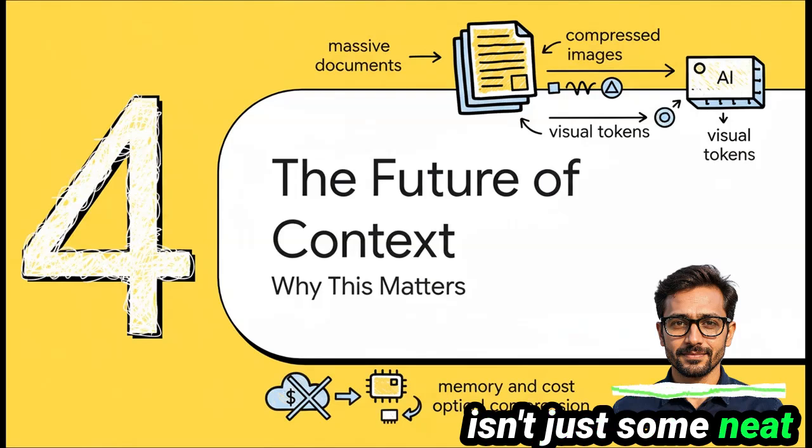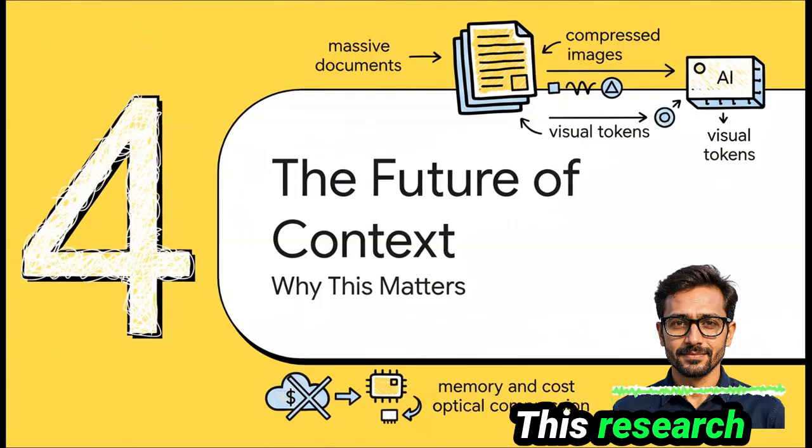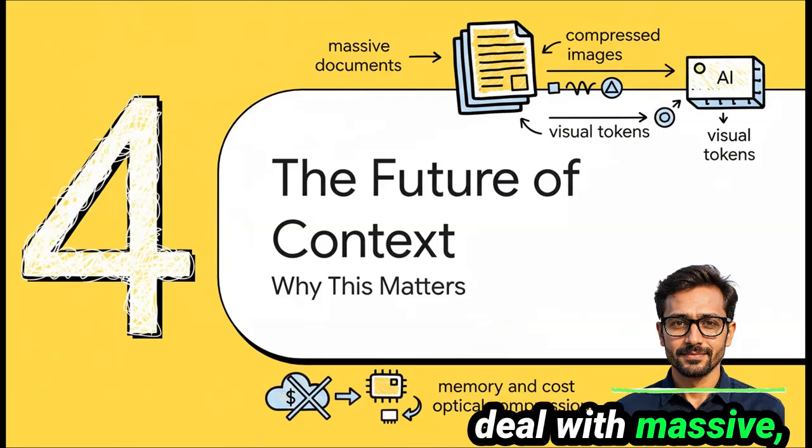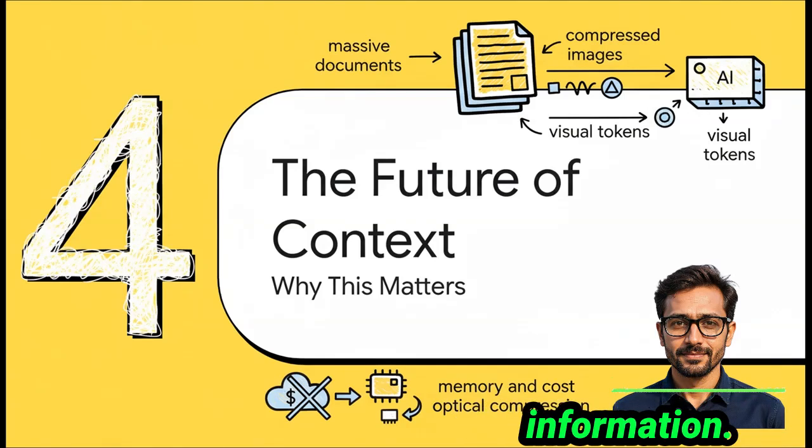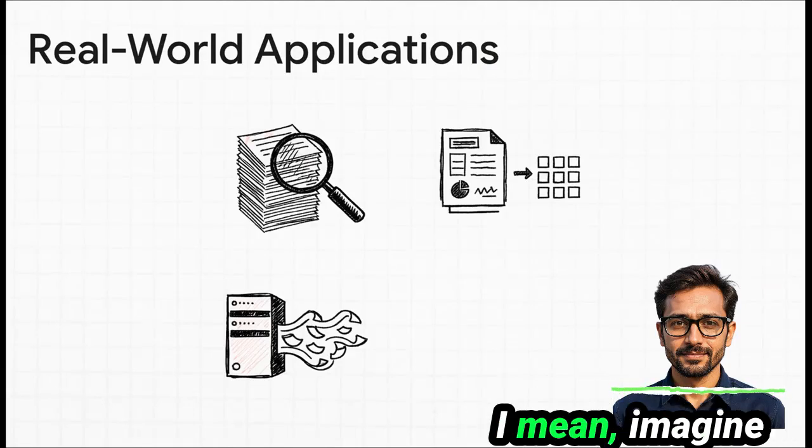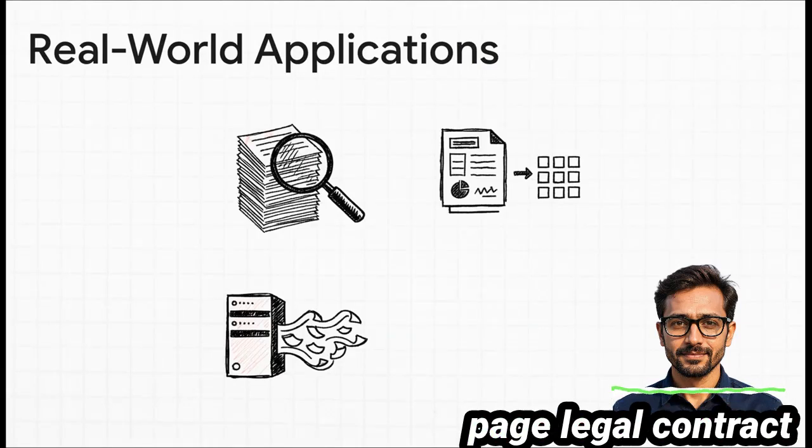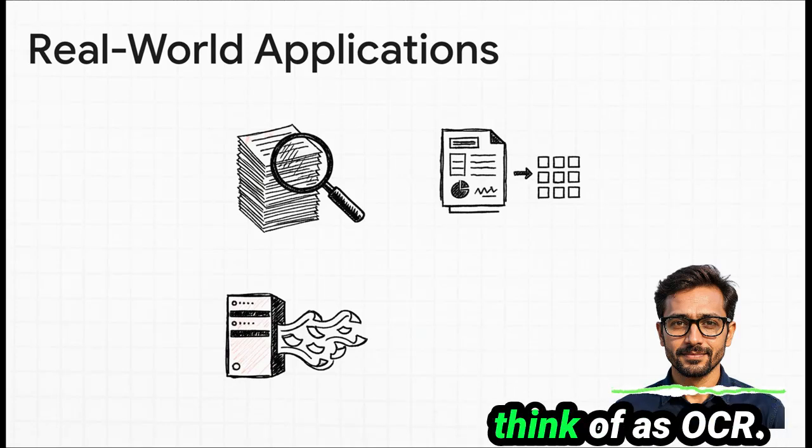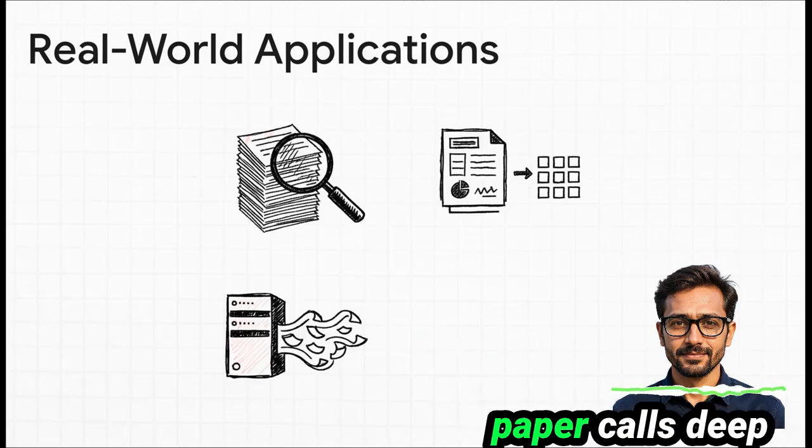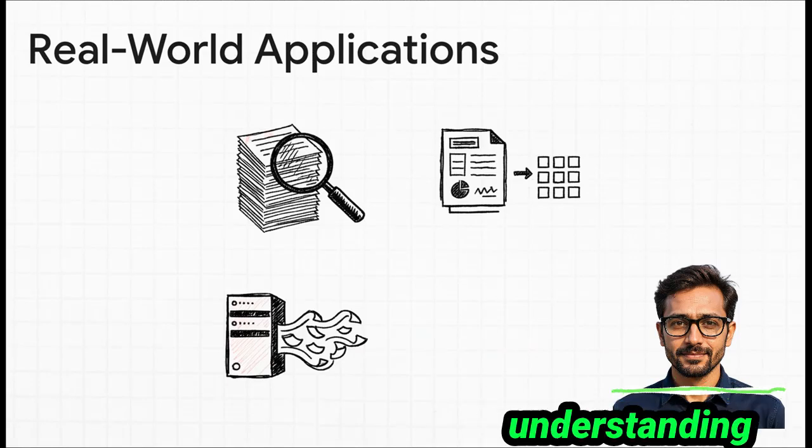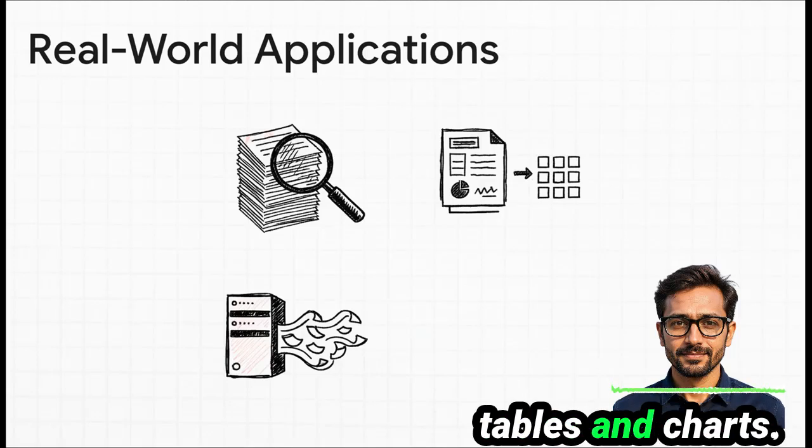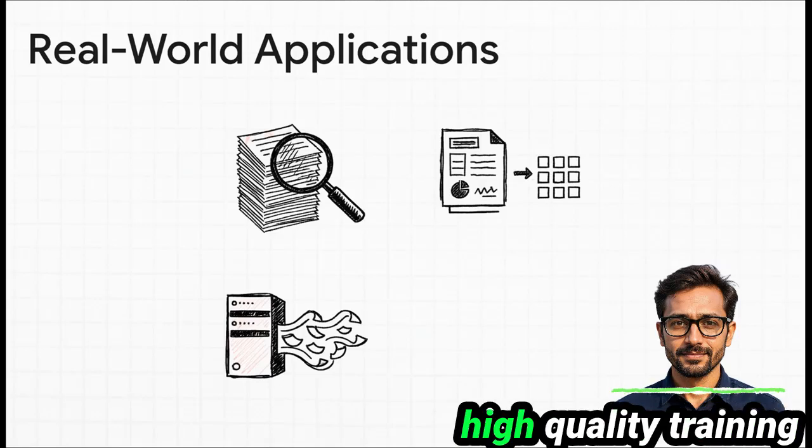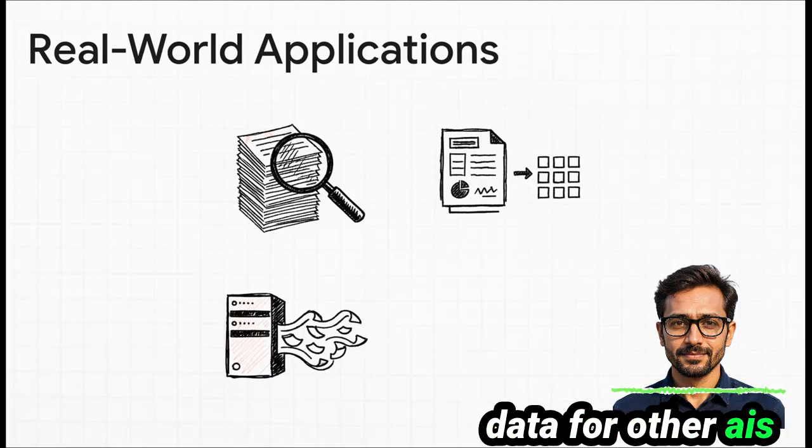So you can see this isn't just some neat academic trick. This research could have some really profound implications for the whole field of AI, especially in how we deal with massive, overwhelming amounts of information. The real world uses here are just huge. I mean, imagine being able to analyze a hundred page legal contract or a dense financial report in a matter of seconds. This is also a giant leap for what we think of as OCR. It can do what the paper calls deep parsing, basically intelligently understanding complex stuff like tables and charts. In fact, it's so efficient that a single computer running this can generate over 200,000 pages of high-quality training data for other AIs every single day.